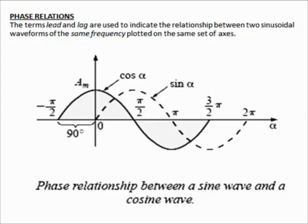Let's discuss phase relation. The terms lead and lag are used to indicate the relationship between two sinusoidal waveforms of the same frequency plotted on the same set of axes. The phase relation is about comparing the relationship between two sinusoidal waveforms. It may either be leading, lagging, or in phase. When in phase, the two signals start at the same point.